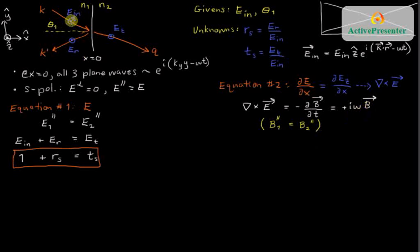Well, B is pointing along this direction like this. So, the component parallel to the interface is the vertical component, the Y component. So, let's write that component of I omega B. And we'll just get I omega B parallel.